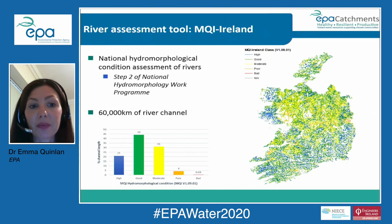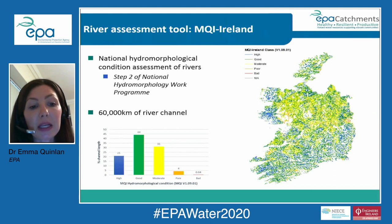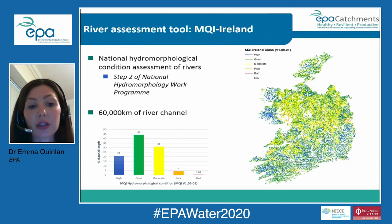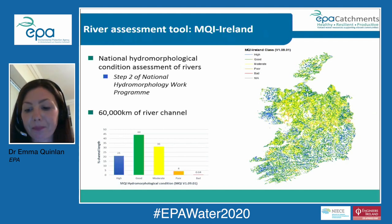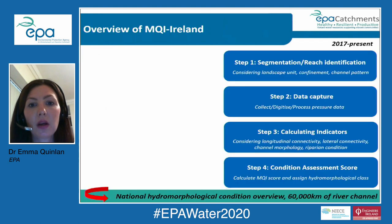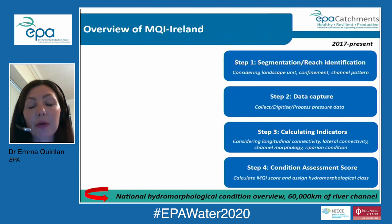We have assessed 60,000 kilometers of river channel. When we look at the percentage of channel length, we can see that a third of the channel is less than good hydromorphological condition, and when you look at the map you can make out patterns of drainage schemes and urban areas. There are four steps to the MQI Ireland tool; the first step is about breaking up the river network into sections or reaches, ideally between one and ten kilometers.